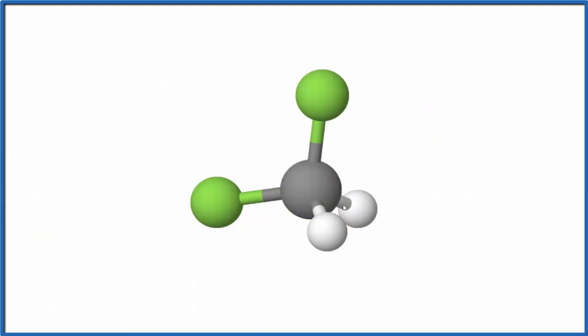We know that the fluorines are more negative, and they're on one side of the molecule. So we think this whole side would be negative. That would make this side positive, and we'd have a polar molecule.